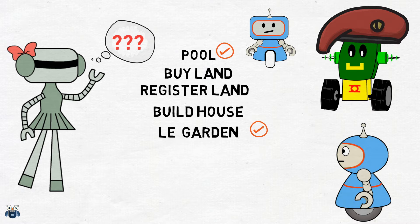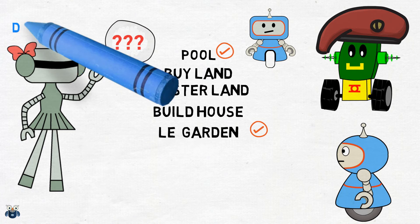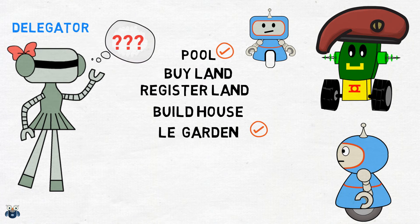Let's not read too much into this example, but just be aware of a few points. We have one object who provides a protocol, or blueprint, of what it wants but it does not know how. This object is the delegating object. Then we have another object who is capable of satisfying one or more of these protocol tasks. This object is the delegate.